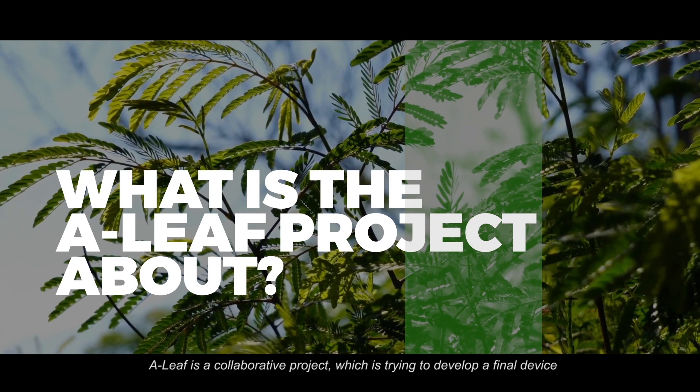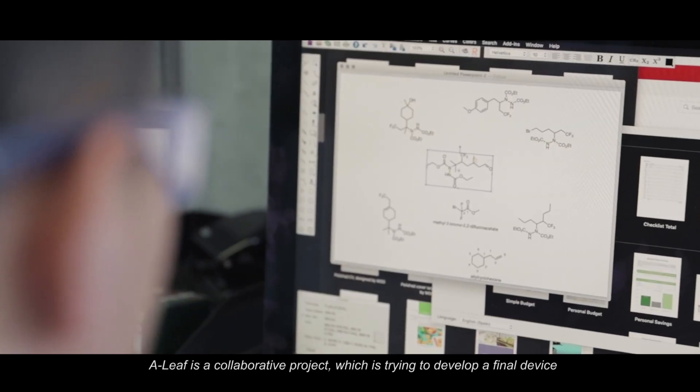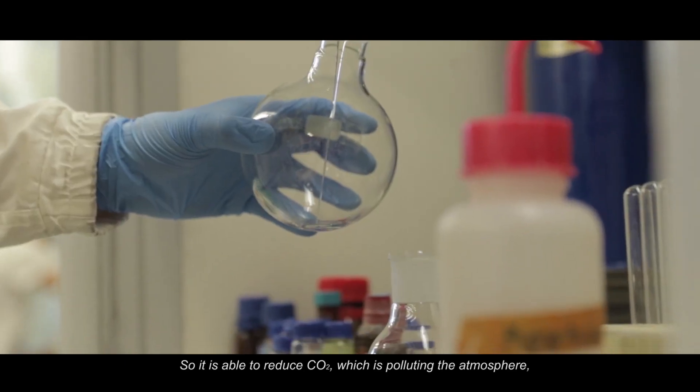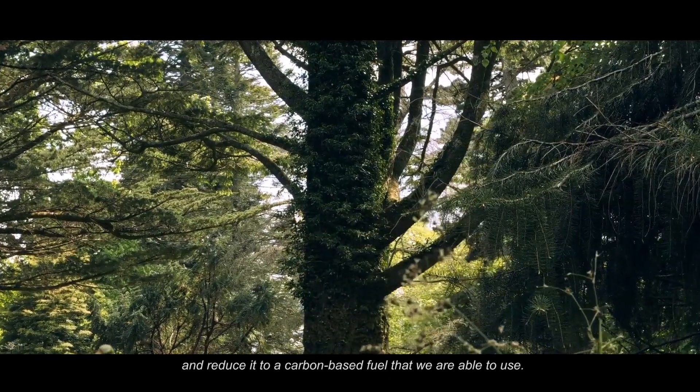Alif is a collaborative project which is trying to develop a final device in order to do artificial photosynthesis. So it is able to reduce CO2, which is a pollutant in the atmosphere, and reduce it to a carbon-based fuel that we are able to use.